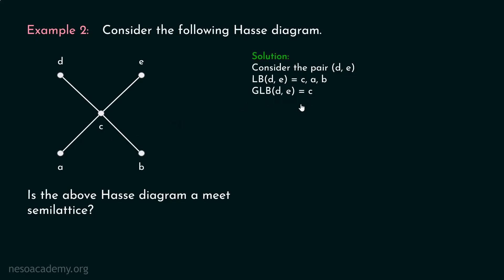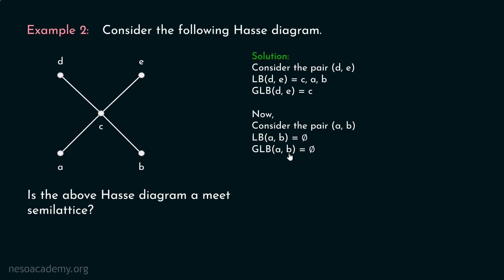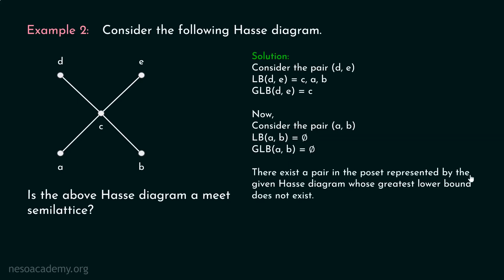Now consider the pair a, b. What are the lower bounds of a and b? There is no lower bound of a and b. We have to consider these two elements and trace the path down, but there is nothing below a and b. So lower bounds of a and b does not exist. Therefore, it is true that the greatest lower bound of a and b also does not exist. Hence, there exists a pair in the poset represented by the given Hasse diagram whose greatest lower bound does not exist.